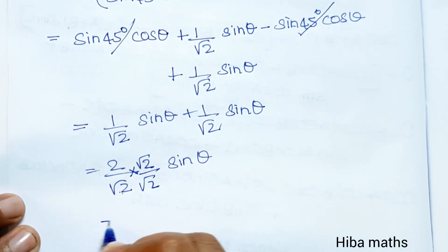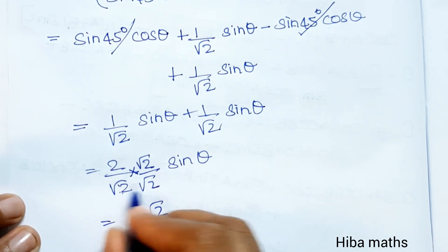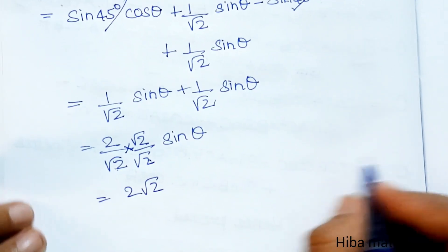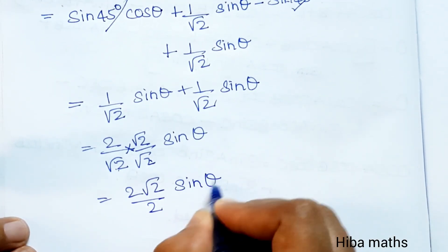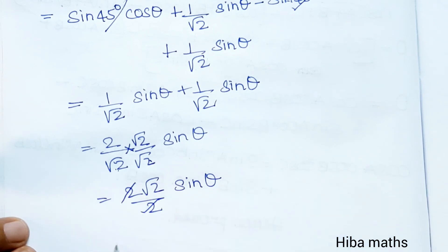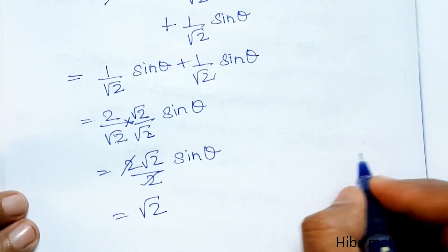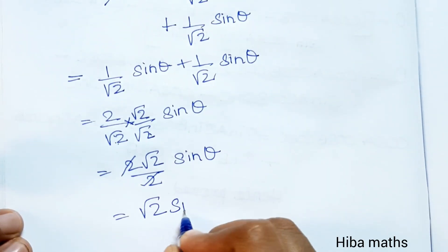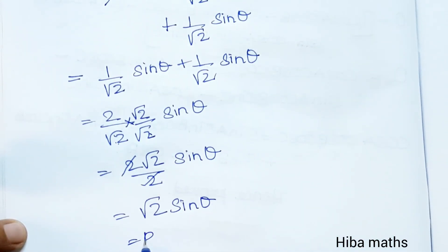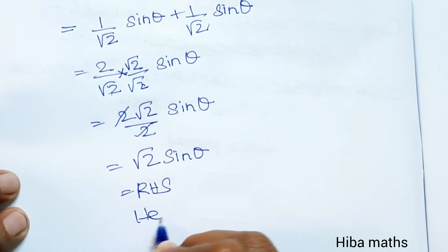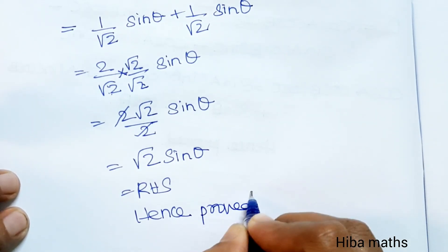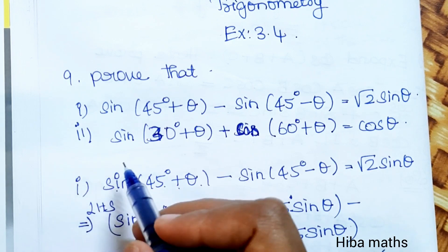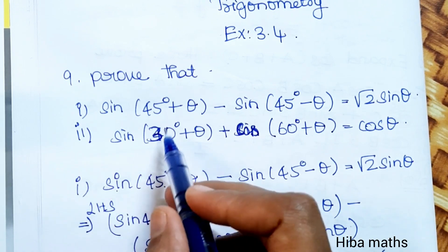Rationalizing: (2/√2)·sinθ — multiply numerator and denominator by √2 to get (2√2)/(√2·√2)·sinθ = (2√2)/2·sinθ. The 2 cancels, giving us √2·sinθ. Hence proved.